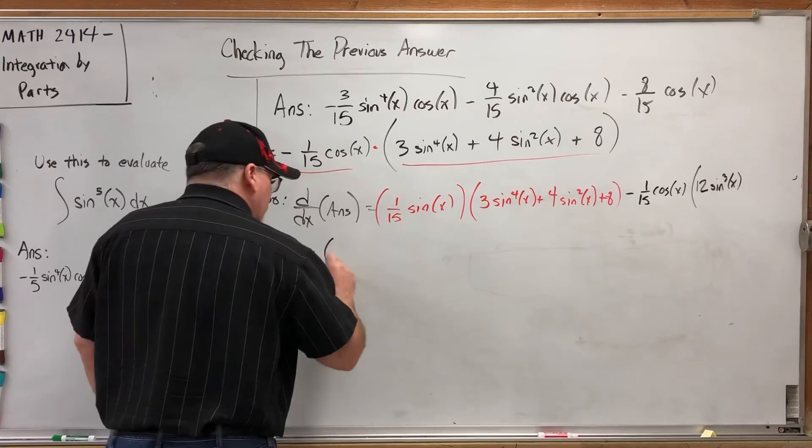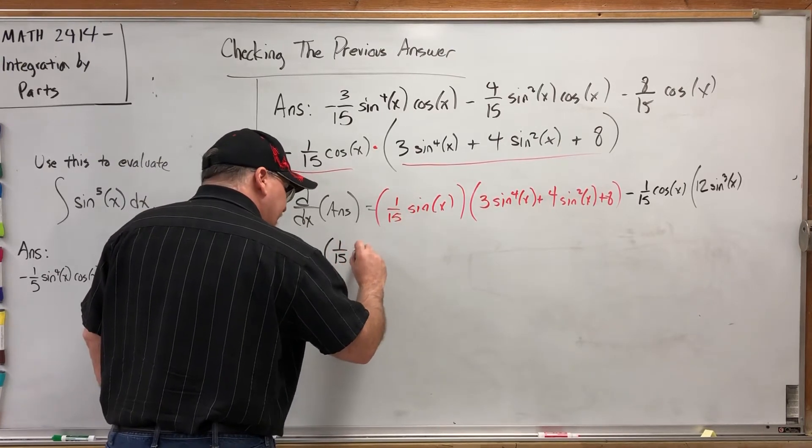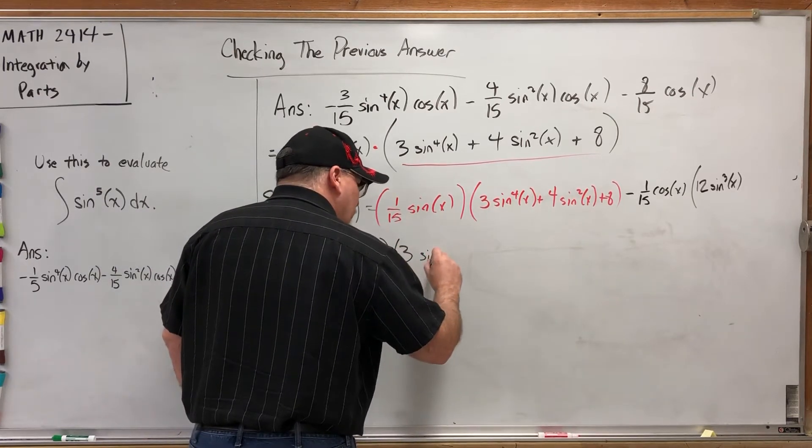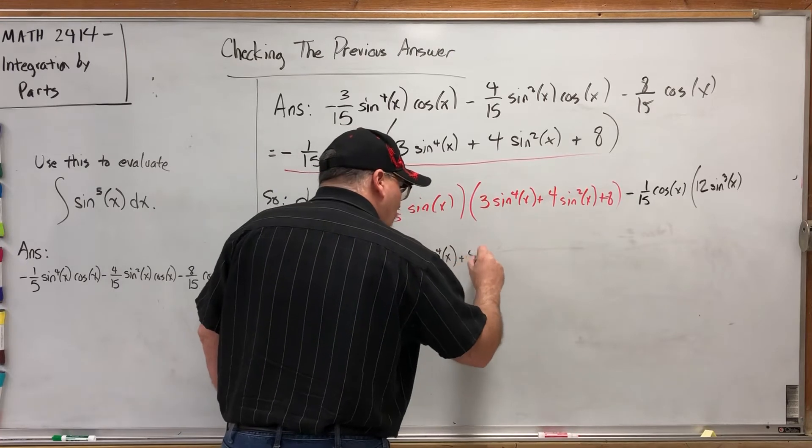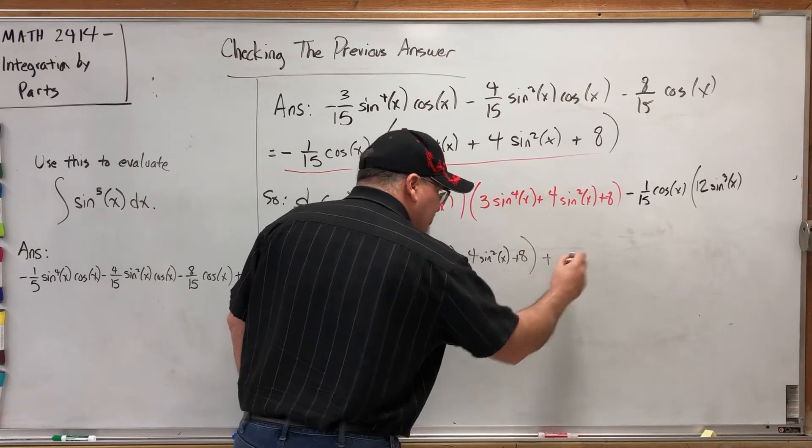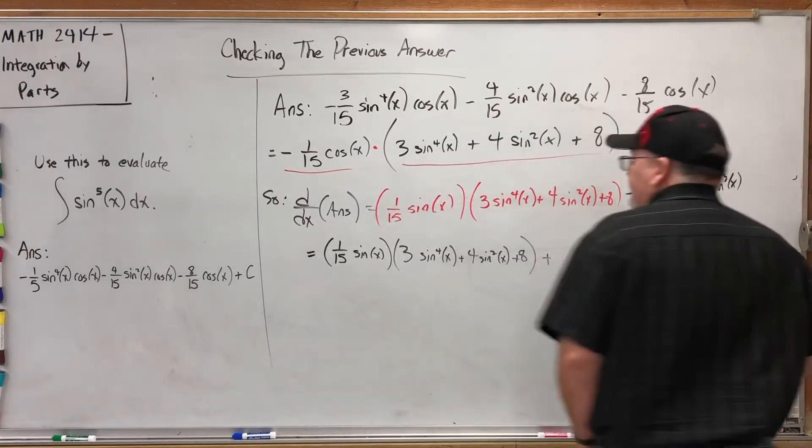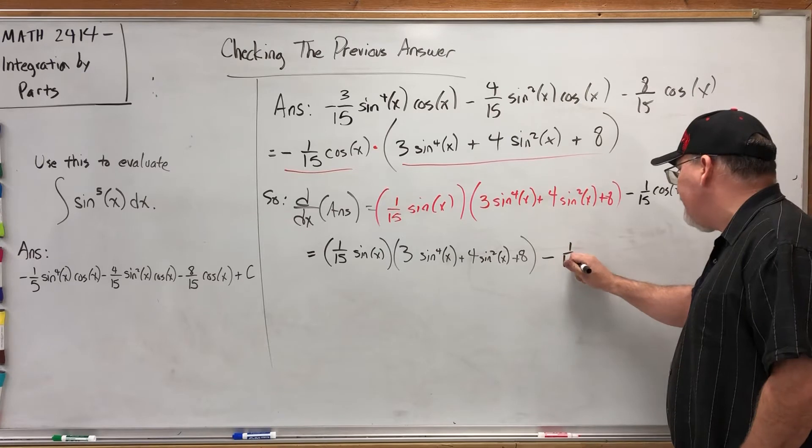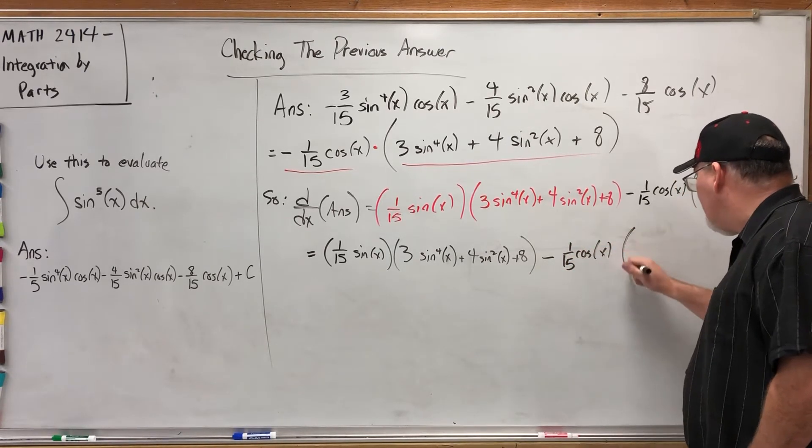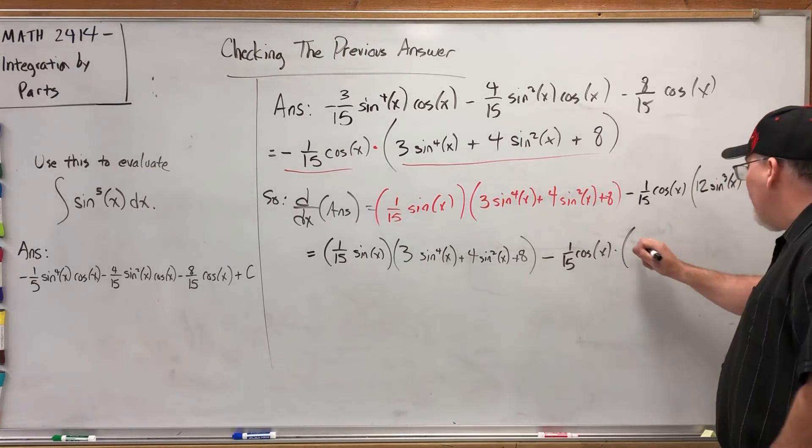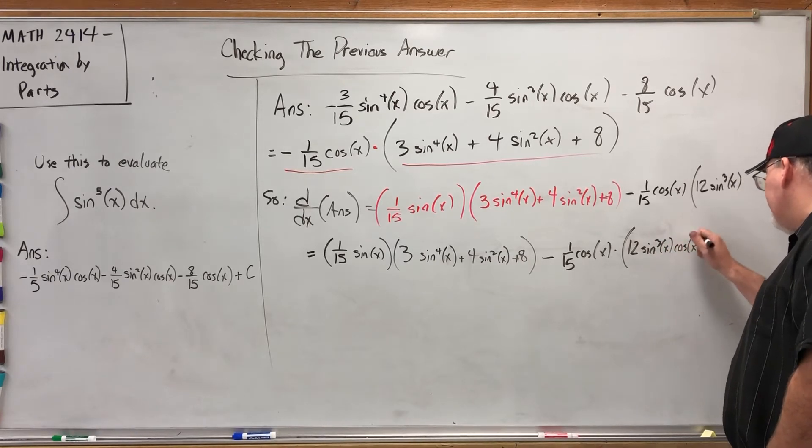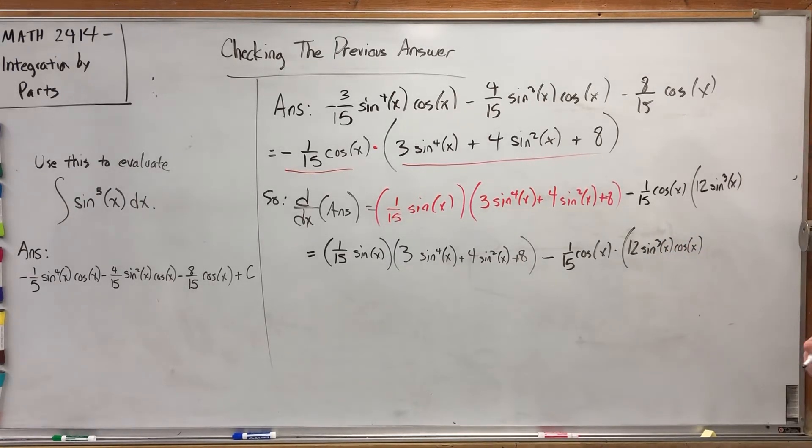The derivative here would be twelve—let's start writing it—twelve sine to the third power X, and then times the derivative of the inside. The derivative of sine is cosine, and I'm going to run out of room. Okay, I know it's going to make the video longer, but it's an optional video anyway, so I'm going to start rewriting this answer over. One-fifteenth sine of X times the second, so times three sine to the fourth power of X plus four sine to the second power of X plus eight.